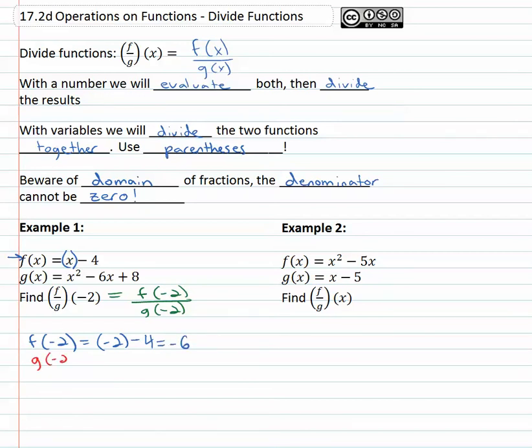We still have to find g of negative 2, which means we're going to plug negative 2 into the g function. Replacing the variables with negative 2, we have negative 2 squared minus 6 times negative 2 plus 8. Squaring and multiplying gives us 4 plus 12 plus 8, adding it all together gives us 24.